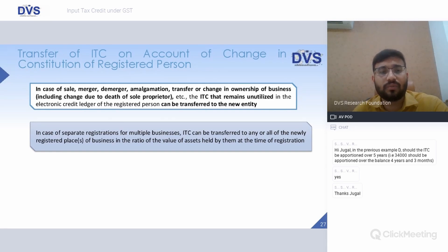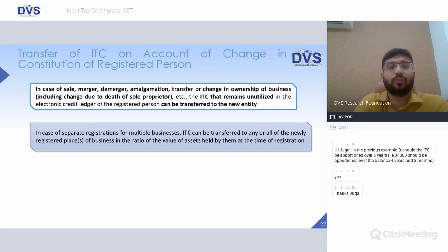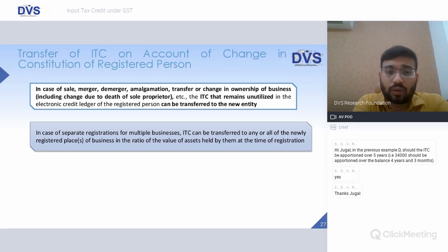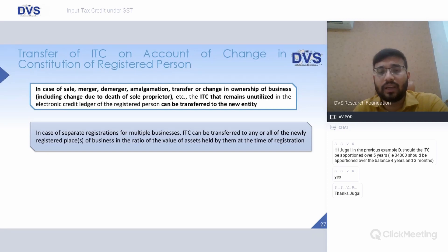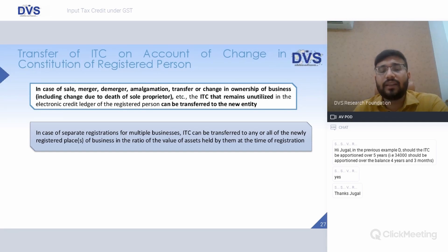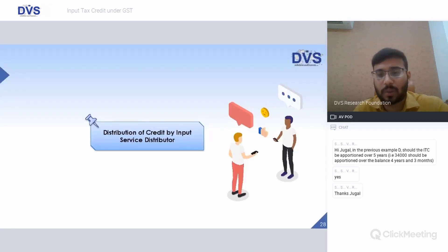Change in constitution of a registered person — amalgamation, demerger, merger, or even the death of a sole proprietor resulting in change of ownership: unutilized ITC would be allowed to be transferred to the new entity or new person. In case of registration for multiple businesses, ITC can be transferred to any or all newly registered entities in the ratio of assets held by them at the time of registration.